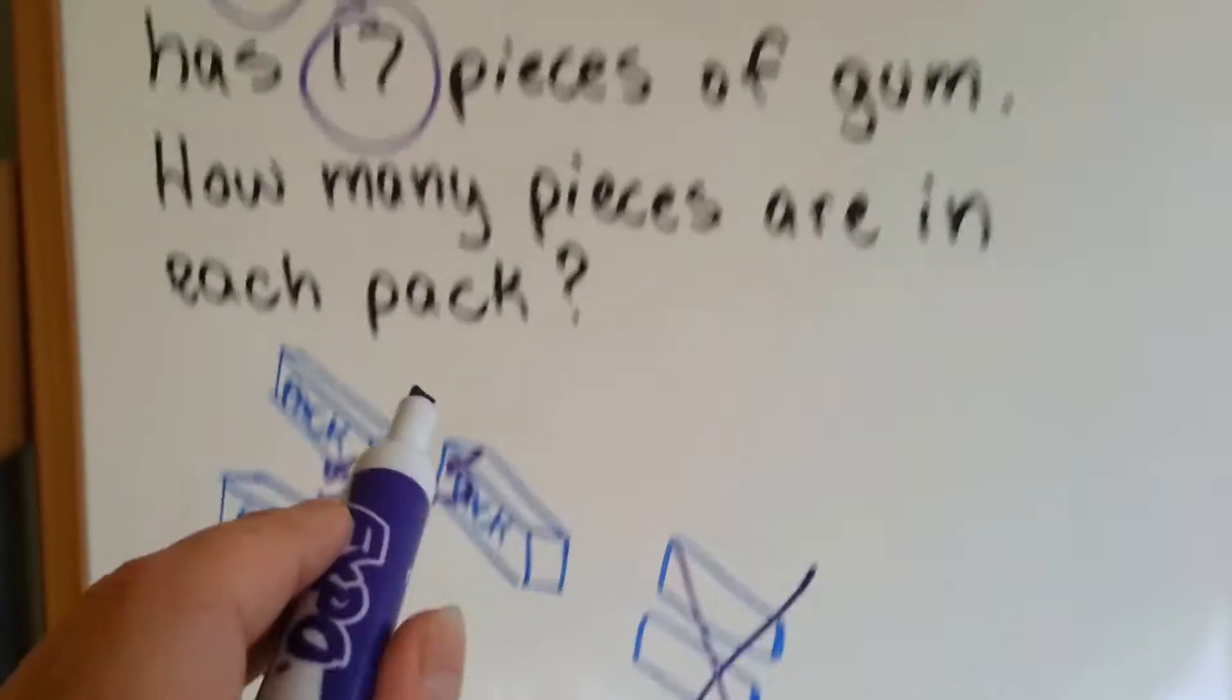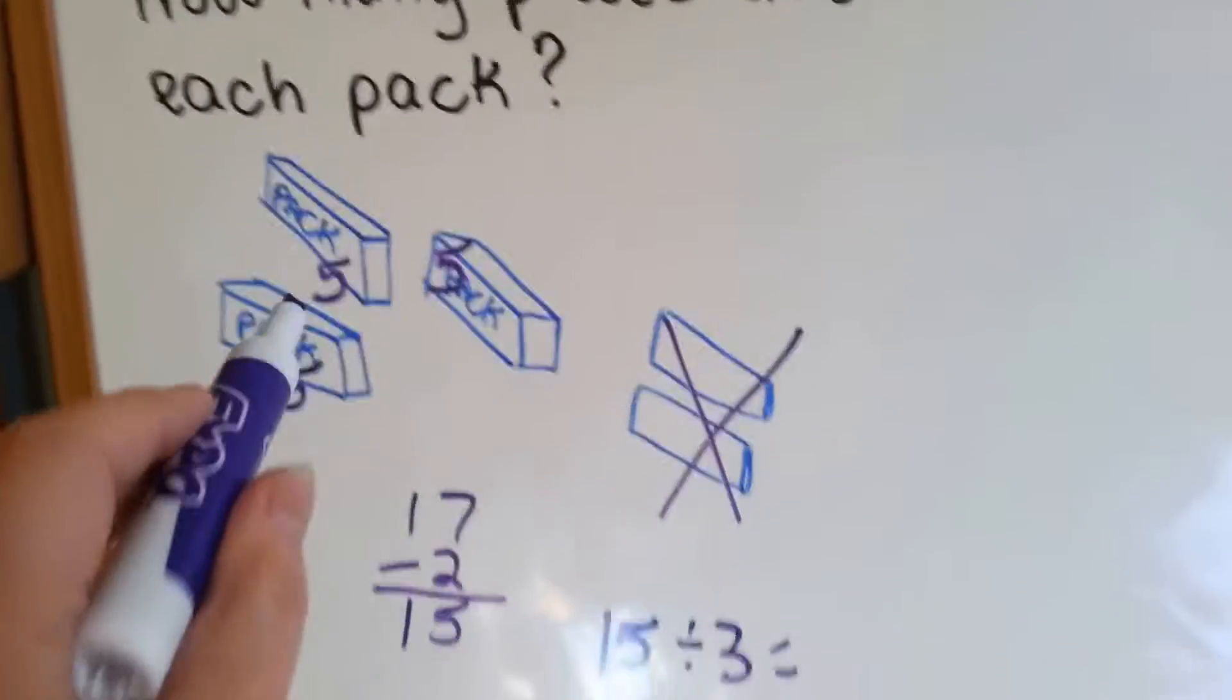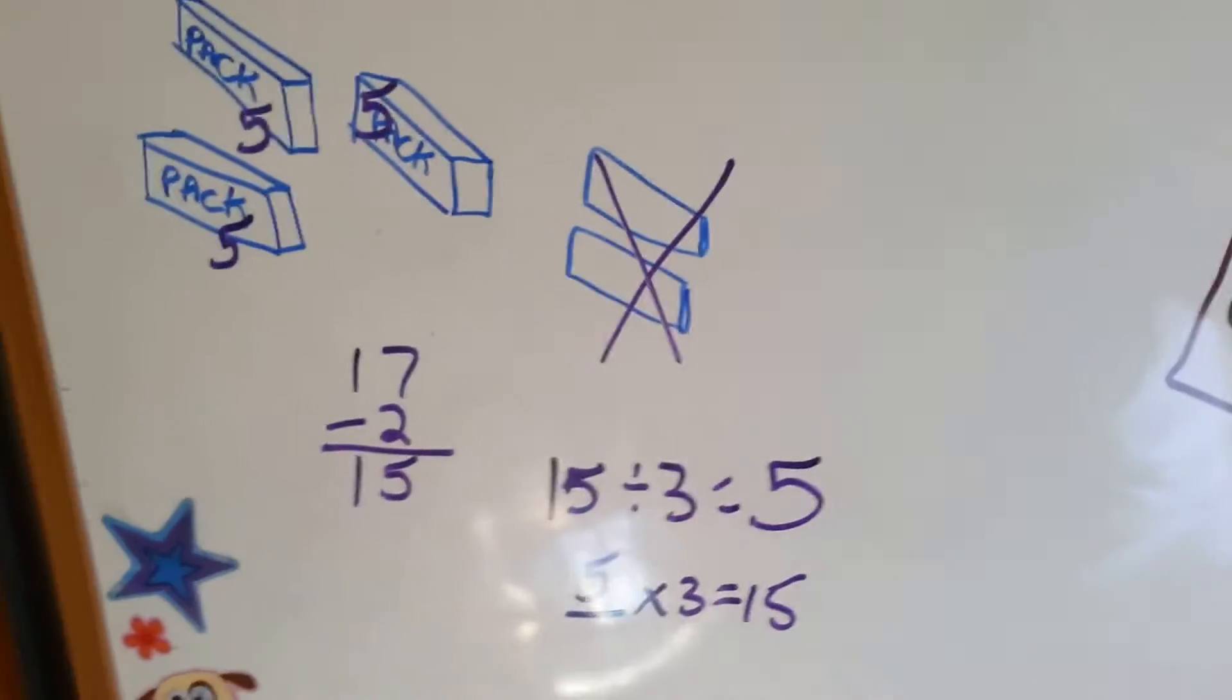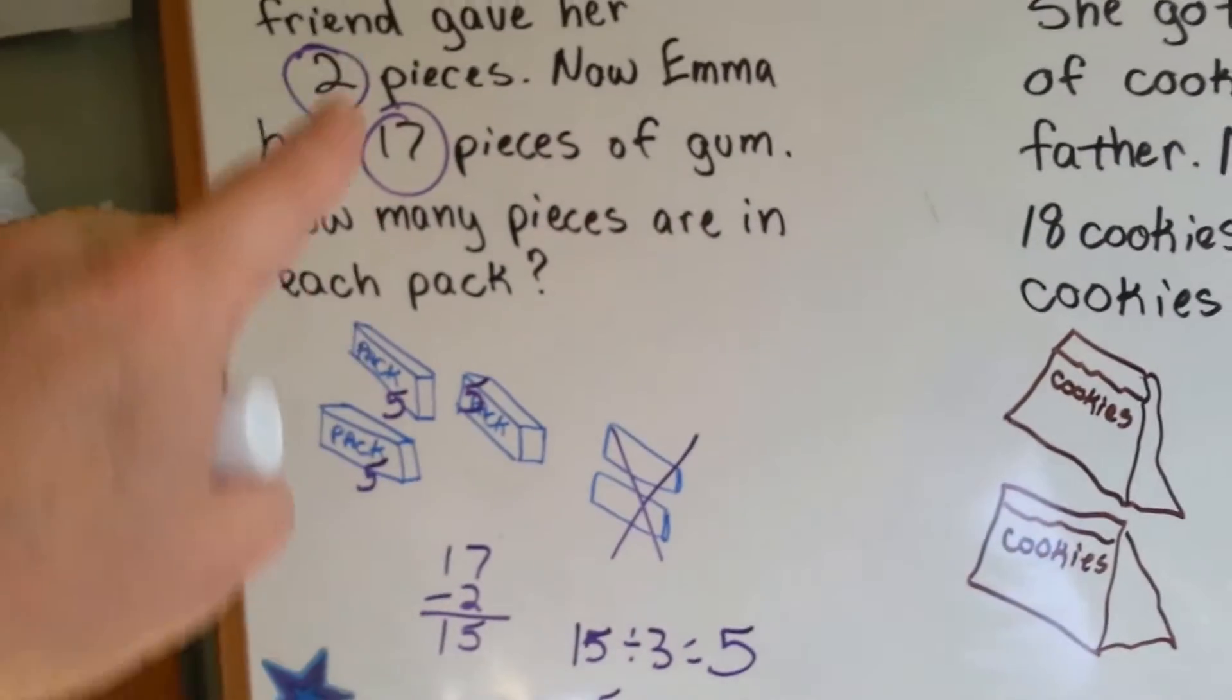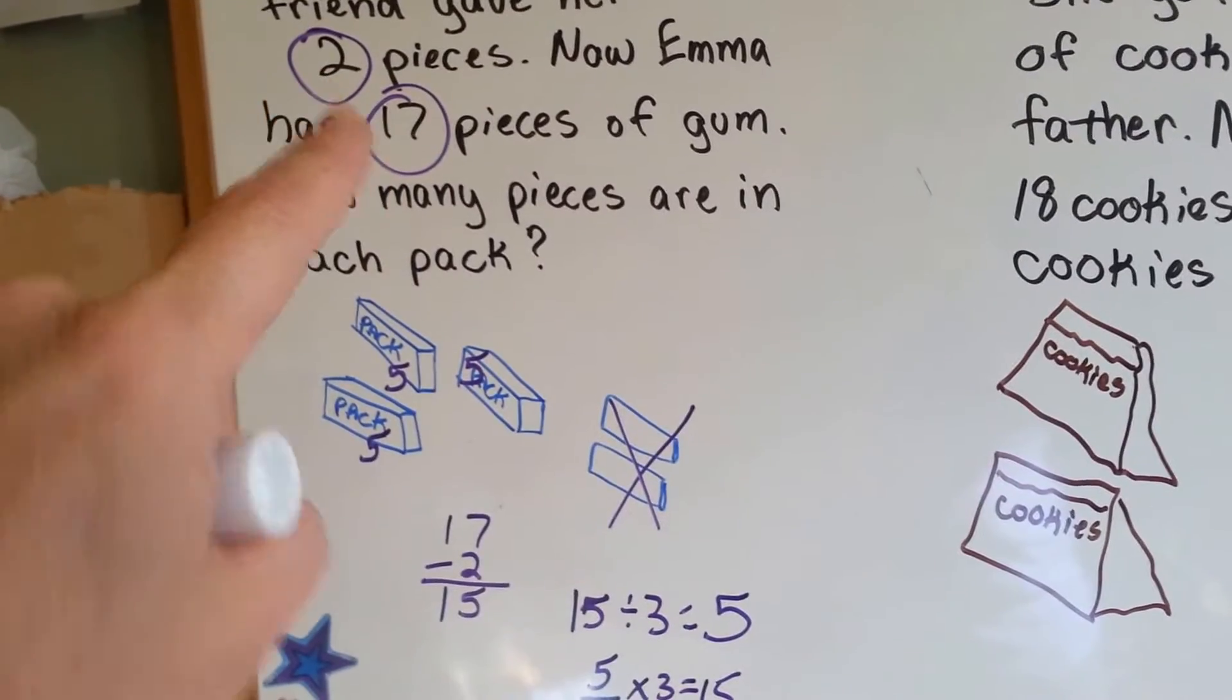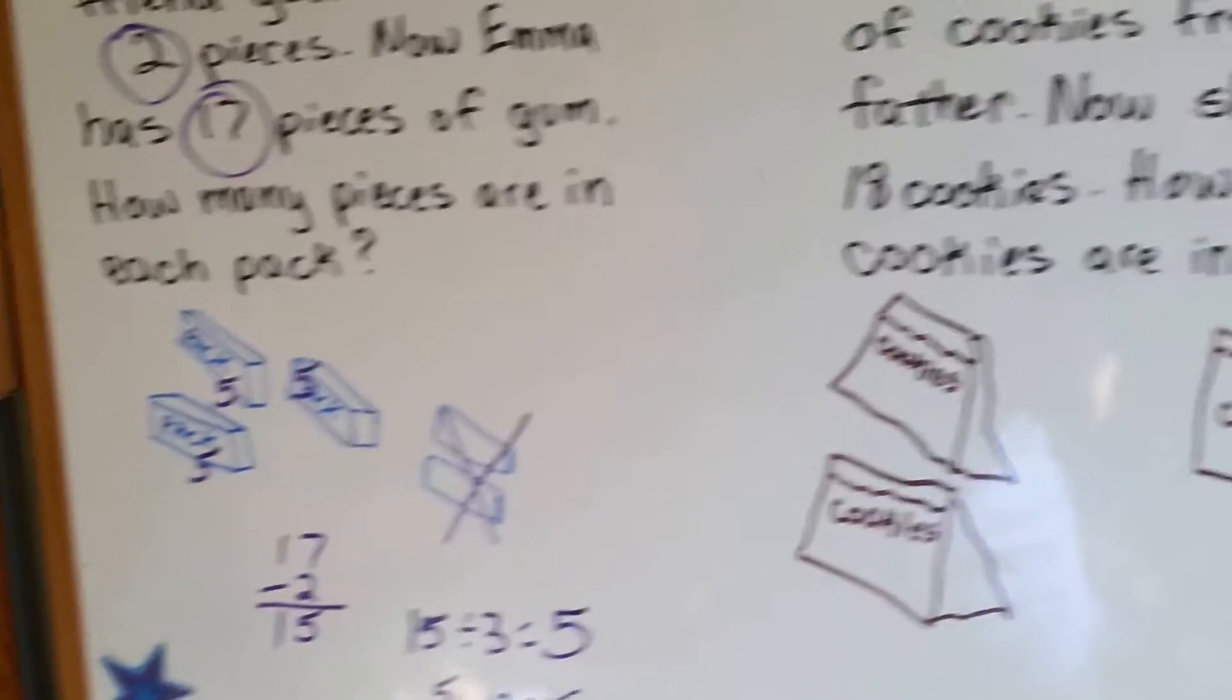See? So, how many pieces are in each pack? The answer is 5. See how we had to do 2 sections of this? First we had to do subtraction, then we had to do division. That's a 2 part problem.